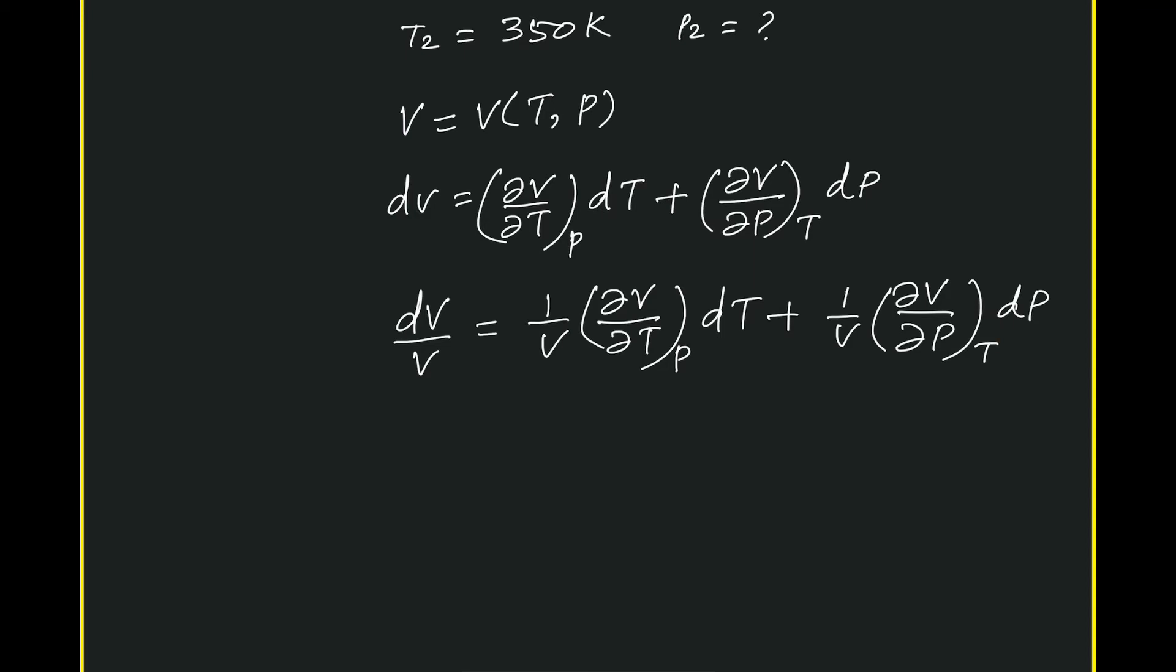So let us write them in terms of β and κ. This is equal to β dT - κ dP.